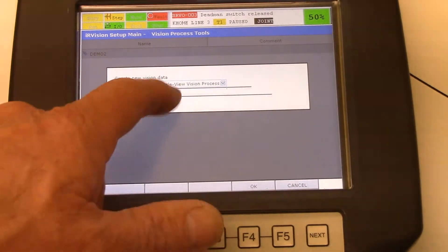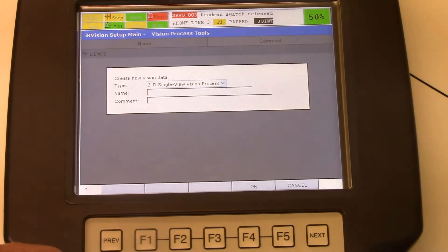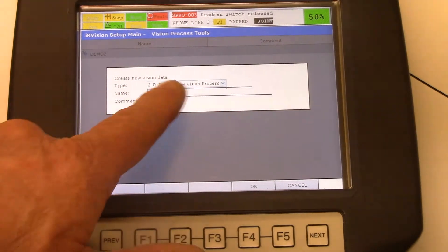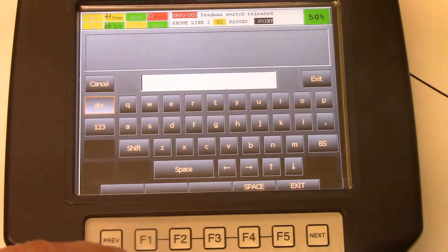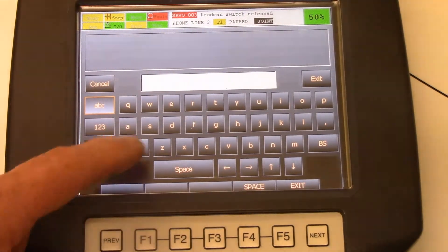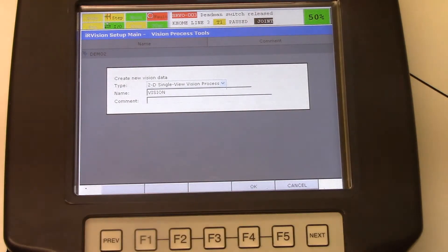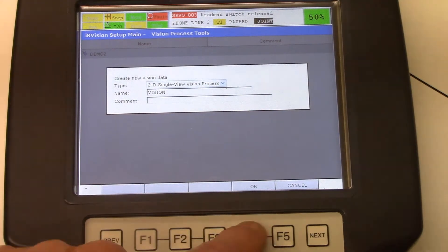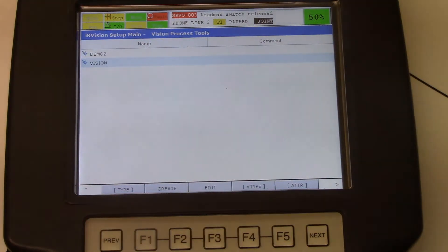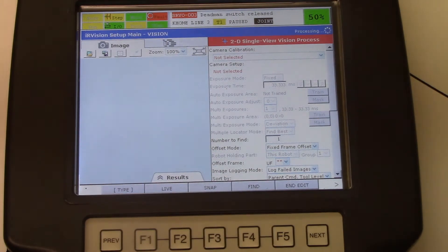Then we need to give our process a name. We'll leave it at the 2D single vision process. We'll select a name and we could just call it vision. We could put a comment in there, but I'm not going to. I'm just going to select OK, close this dialog window, and I'm going to edit that process.